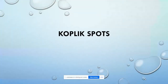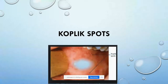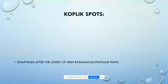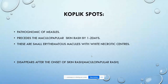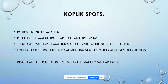A short note on Koplik's spots. These are red macules with white necrotic centers, and they are pathognomonic of the disease measles. They precede the maculopapular skin rash by one to two days. These are small erythematous macules with white necrotic centers, found in clusters in the buccal mucosa near the first molar and premolar region.